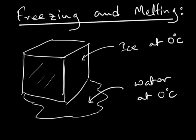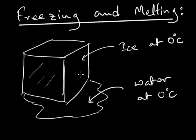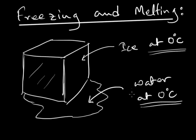At a certain temperature a solid material changes its state from solid to liquid, and that temperature is known as the melting point or the freezing point. Here is an example: the solid state of water is ice. At 0 degrees Celsius the ice melts into water. Both the ice and the water are at 0 degrees Celsius but their states are different.